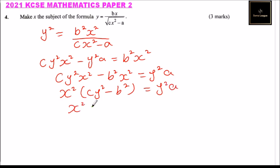x squared equals y squared a divided by cy squared minus b squared. So you get the square root for both sides.